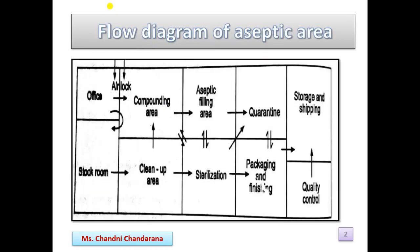Here is the flow diagram of the aseptic area, or production area. First, there is a stock room from where we get the material. That material is cleaned in the cleanup area. After that, it comes to the compounding area. Then it comes to the aseptic filling area, where sterilization is carried out. After that, it comes to the quarantine area. From there, the product is packaged and labeled, then moved to the quality control or storage and shipping area.